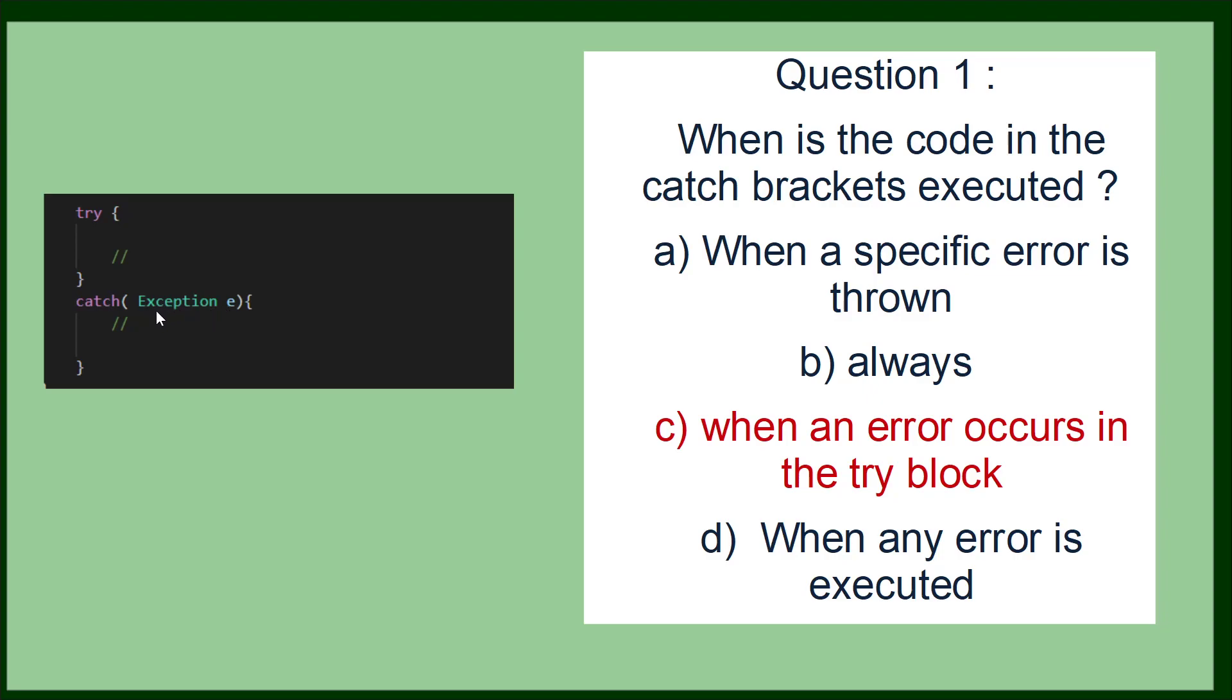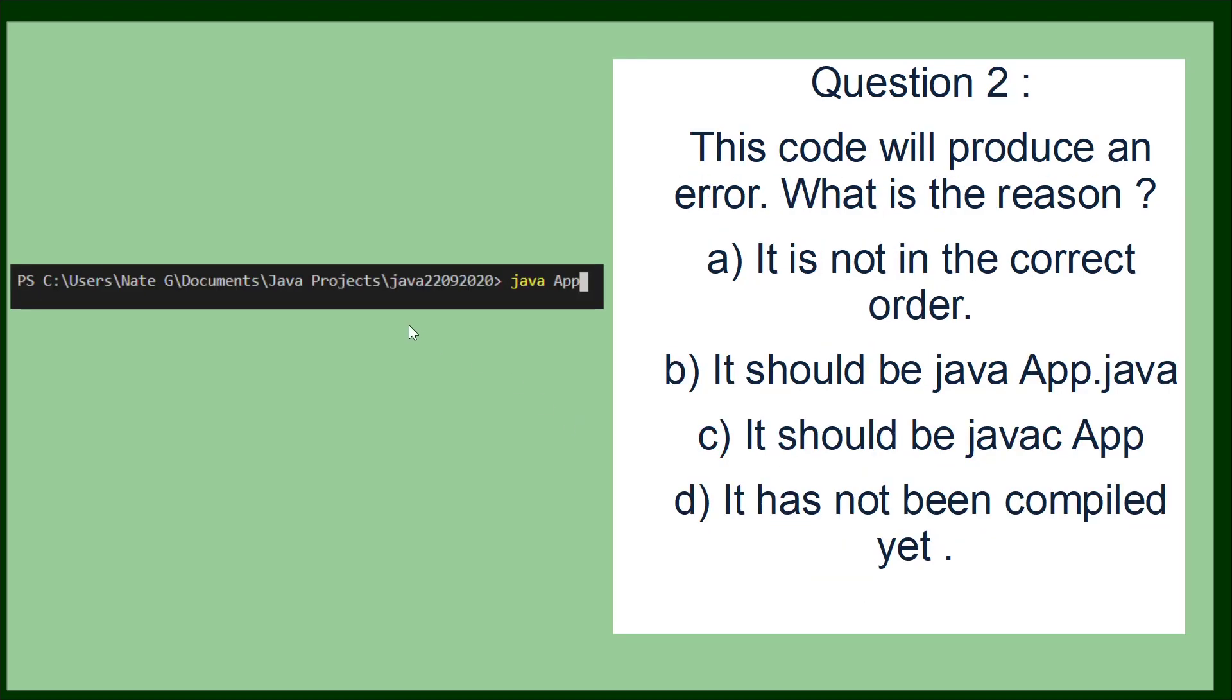Because this exception is the parent class, and it's not a specific kind of exception like an index out of bounds exception, any exception or any error that occurs in this try block will be executed in this catch statement. So the first answer is C. If you're struggling with understanding why that is, I would go to my playlist and have a look at the try-catch statement.